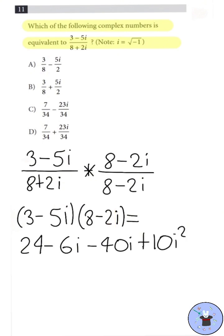For the denominator, we should get a real number, as we multiply it by the complex conjugate to get rid of the imaginary number in the denominator. So, we get 64 plus 16i minus 16i minus 4i squared.